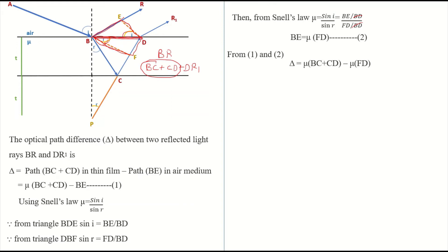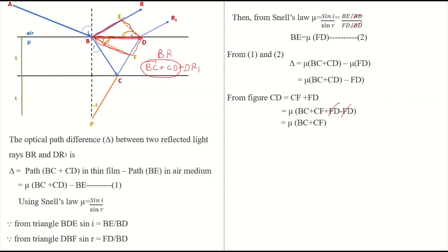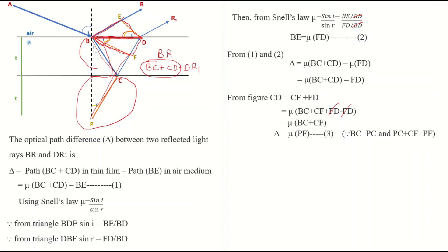From equations 1 and 2, the effective path difference is mu*(BC + CD) − mu*FD. Taking mu common: mu*(BC + CD − FD). From the figure, CD can be written as CF + FD, so substituting, FD cancels and we get mu*(BC + CF). Since the triangles are replicas, BC equals BC, so BC + CF can be written directly as BF.